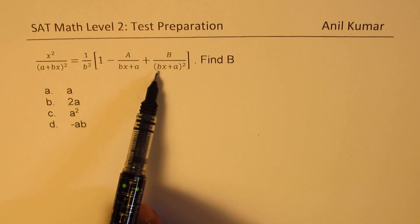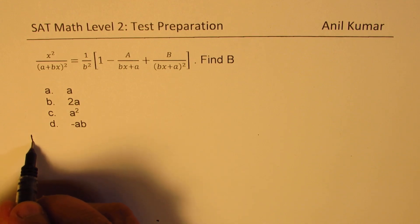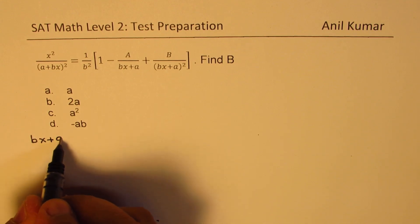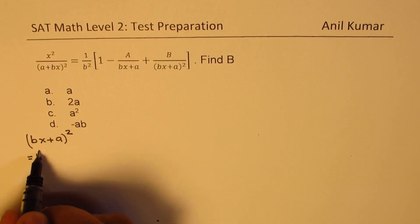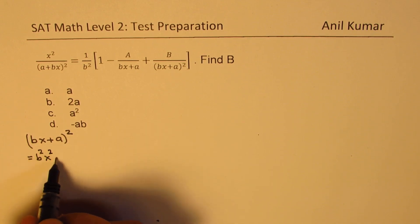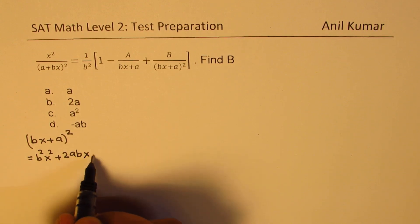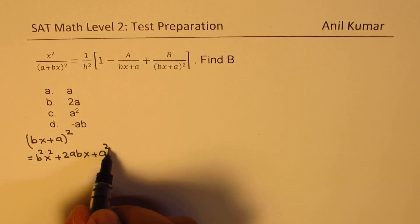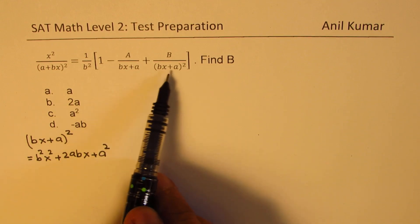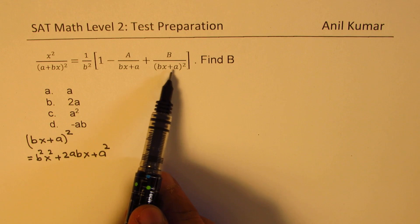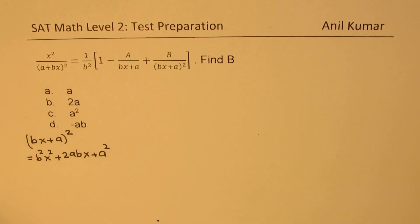Let us understand what (bx plus a) whole square is. So (bx plus a) whole squared is basically equal to b squared x squared plus 2abx plus a squared. That is the term we are looking for, which will cancel with (bx plus a) whole squared.